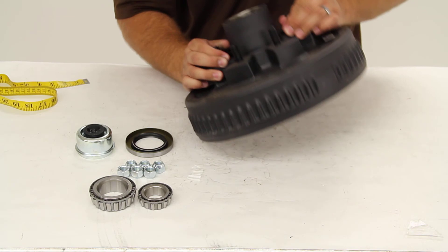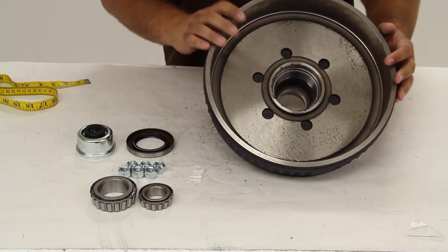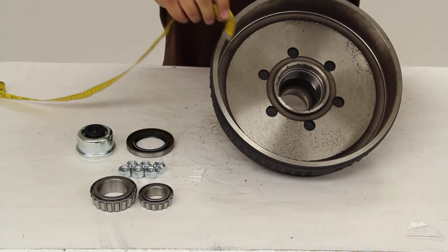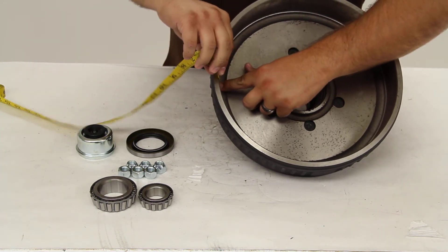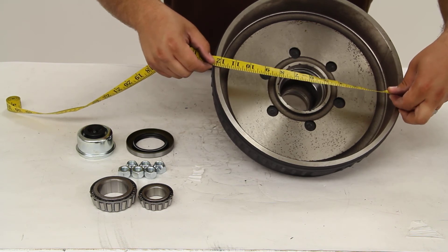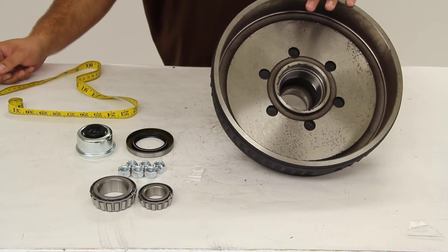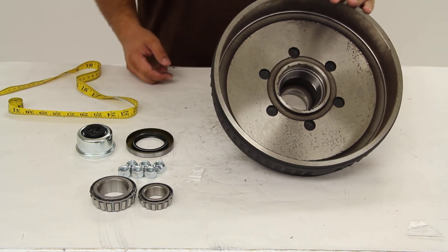Now we'll take a look inside the drum and take a couple of measurements. Our depth measures in at about 2 1/4 inches. Our diameter across the inside is 12 inches, which means that this drum should be used with 12 inch by 2 inch brake assemblies.